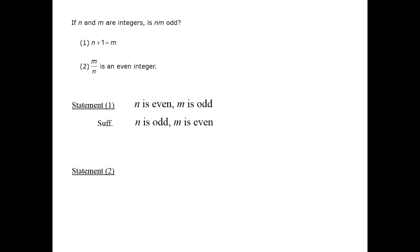Statement 2 tells us that m divided by n is an even number. Hence, m is that same even number times n. That means that m must be even, since the factor of 2 in that even number will be contained within m.